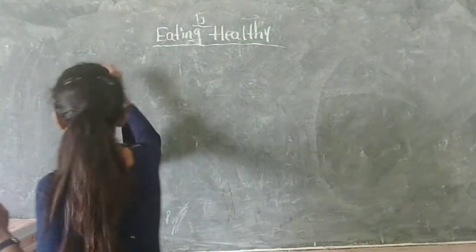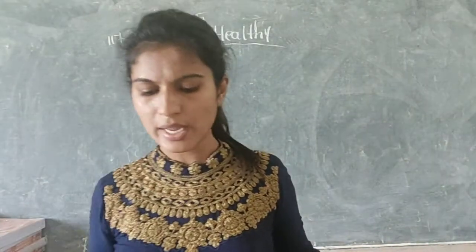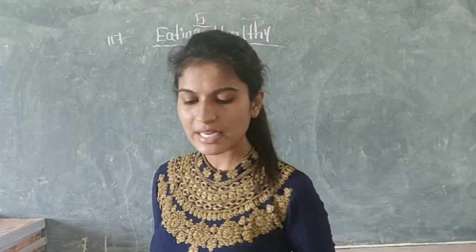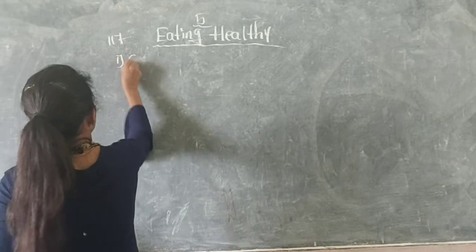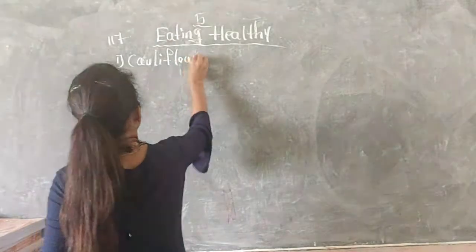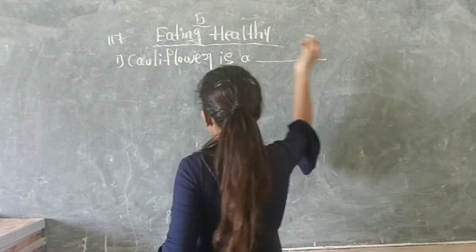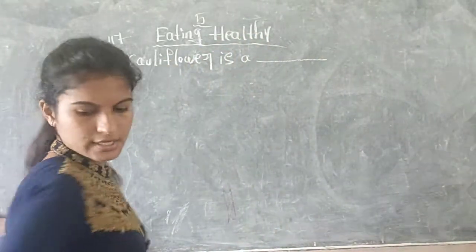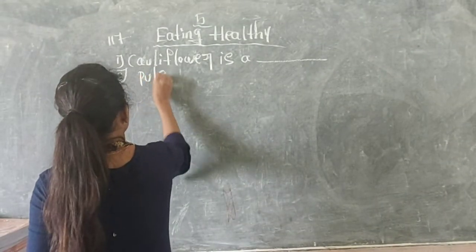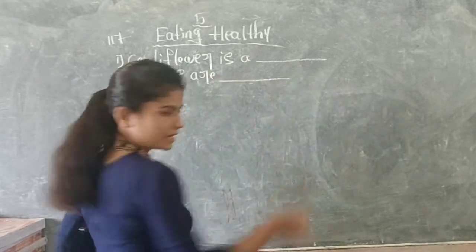Today we are going to discuss some fill-in-the-blanks from page number 117. Open page number 117 and you can see the fill-in-the-blanks exercise. It is time to answer. The first question is: cauliflower is a blank. The second one is: pulses are blank of plants.